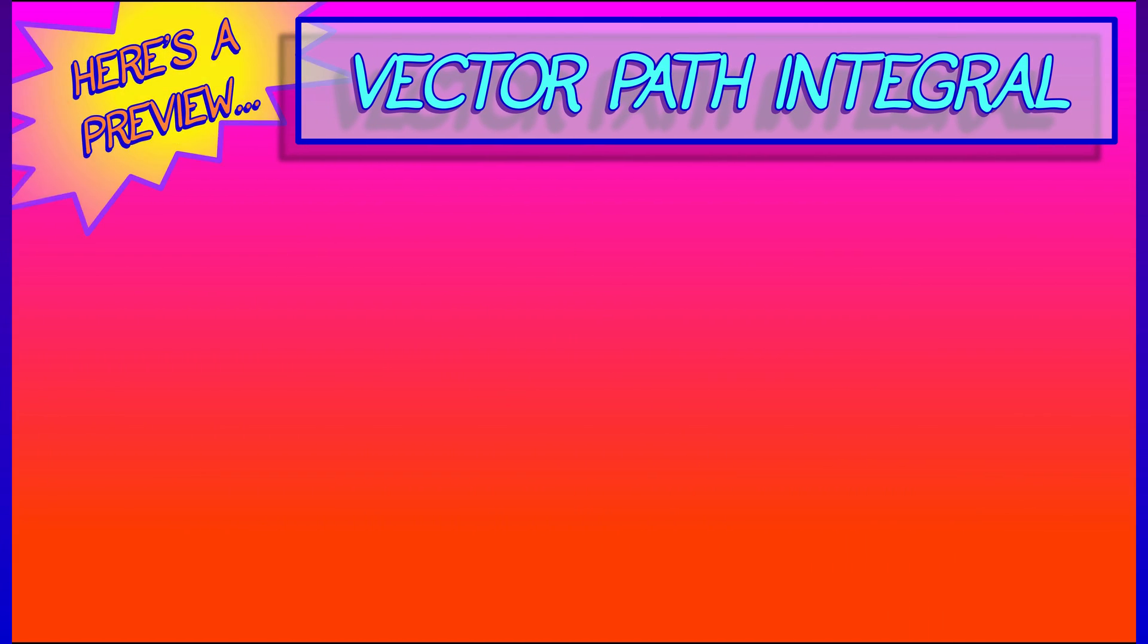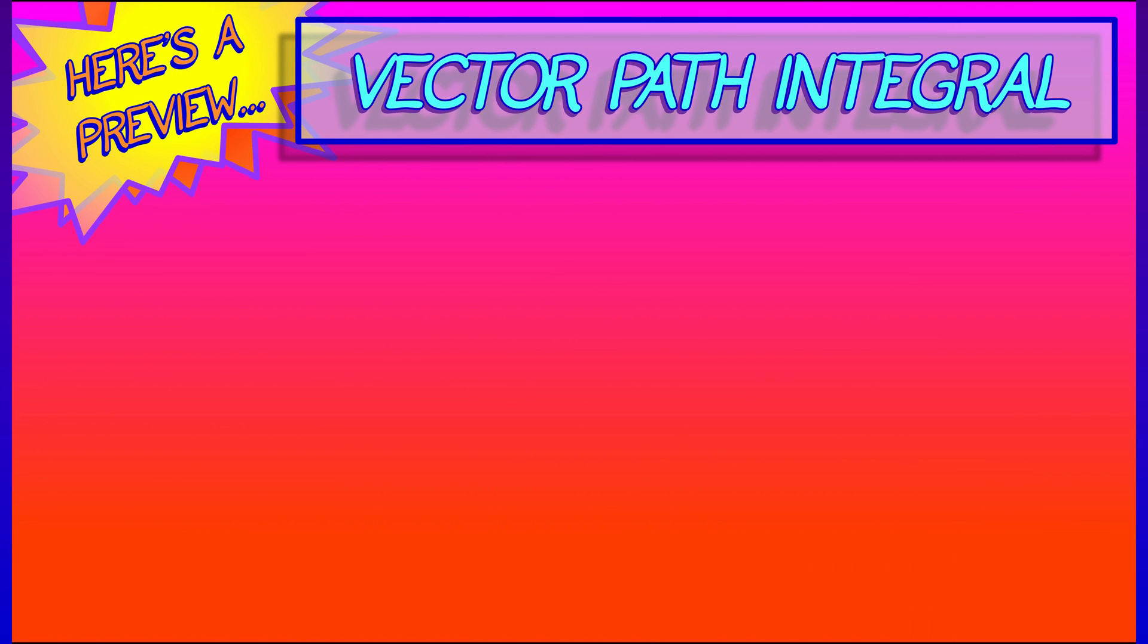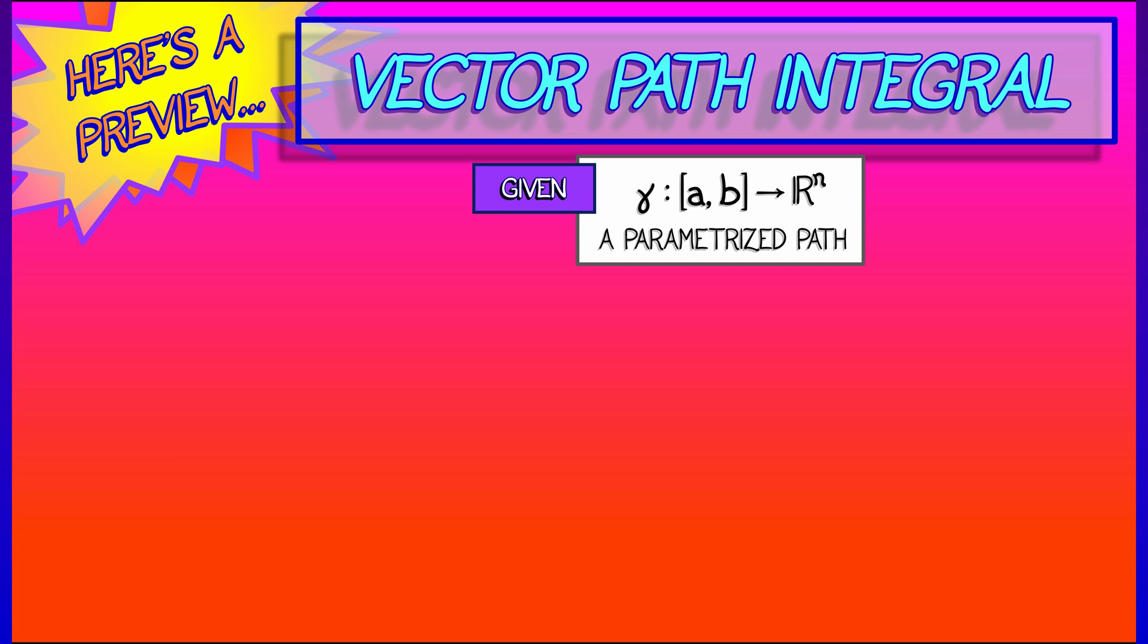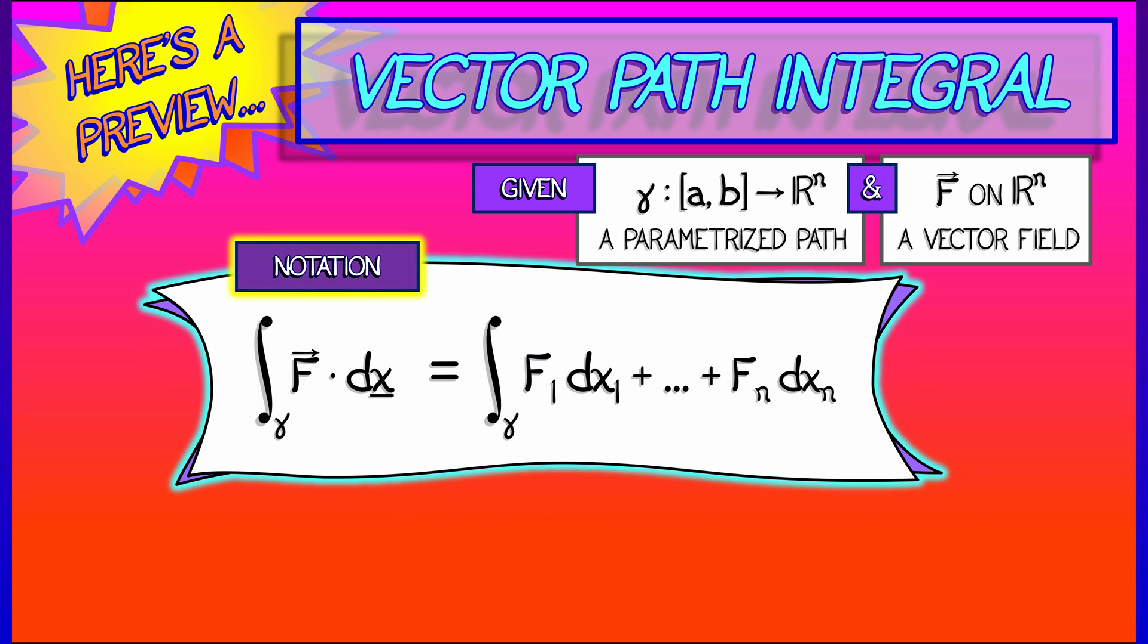Let's see a preview of what this is going to look like in the context of a vector path integral. Let's say you've got gamma, a parametrized path in R^n, and then you have a vector field F also on R^n. Then what we're going to wind up doing is writing down things that look like the following: we're going to integrate over this path gamma something of the form F dot dx.